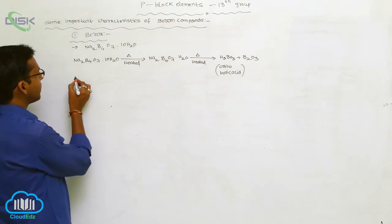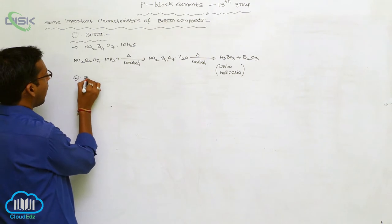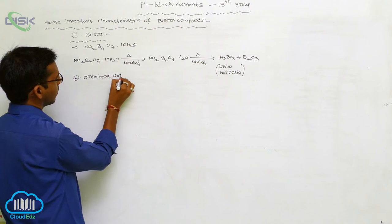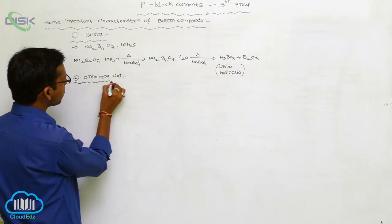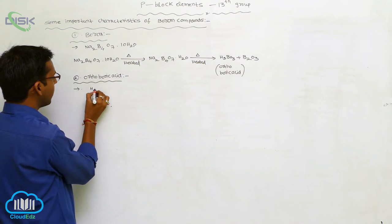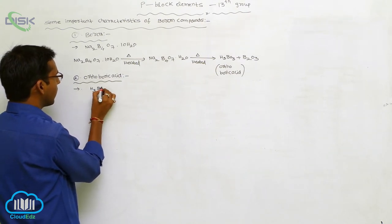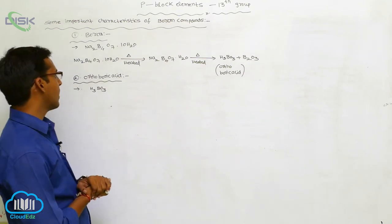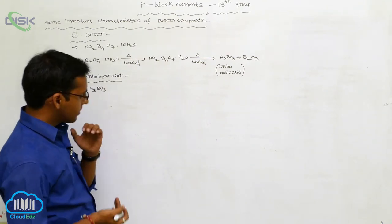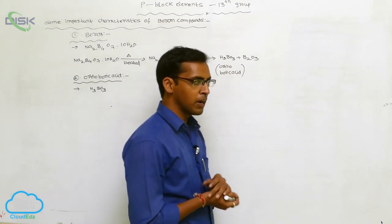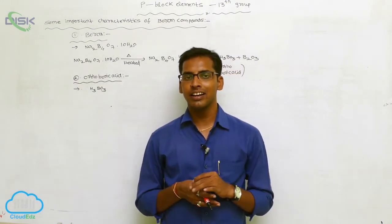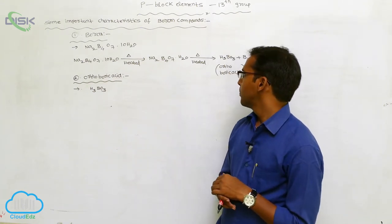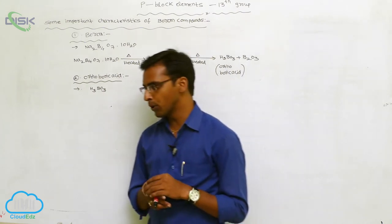Next one is orthoboric acid. This orthoboric acid chemical structure is H3BO3, called orthoboric acid. This orthoboric acid is prepared from borax. That borax is heated at higher temperature, producing orthoboric acid and borate.